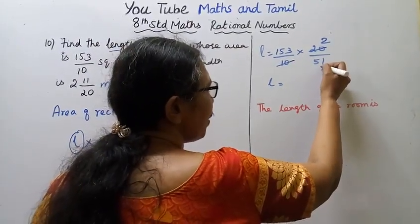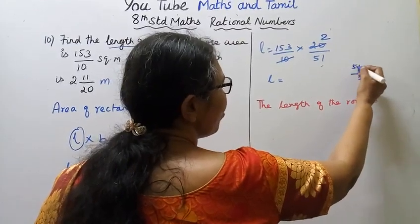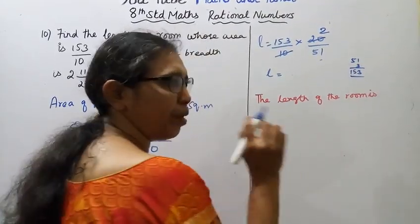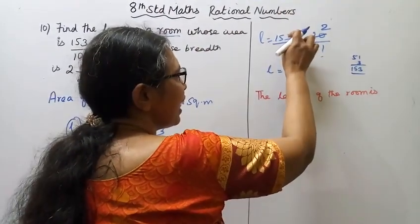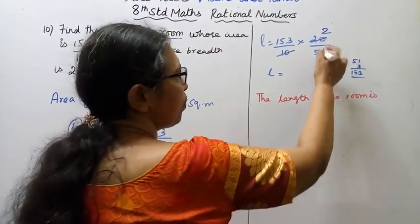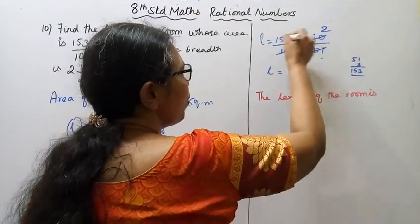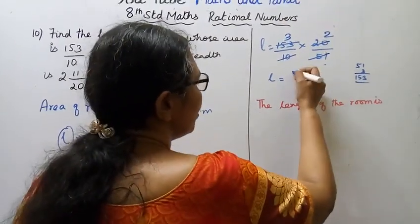Then 3 multiply by 3. Now 51 and 153 cancel to get 3, 3 into 2 equals 6 meter.